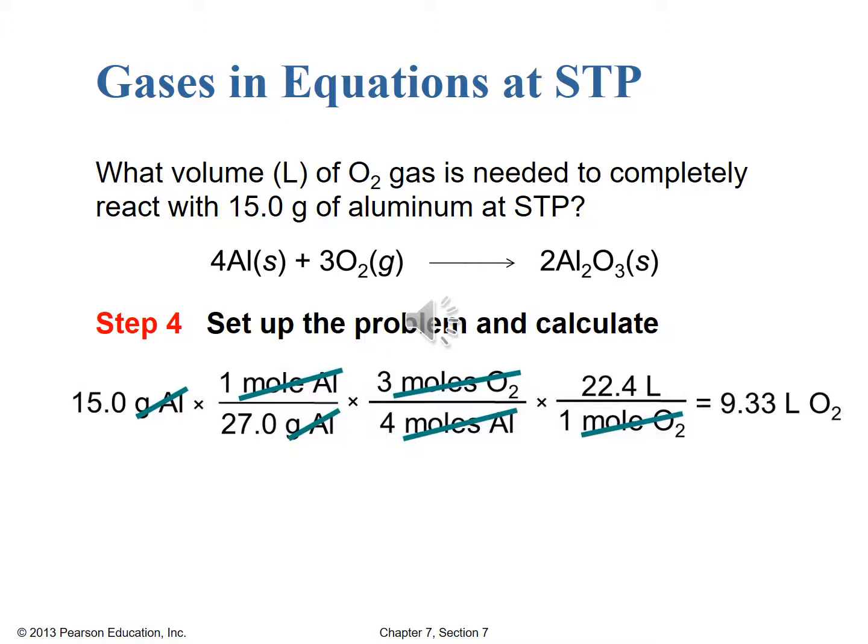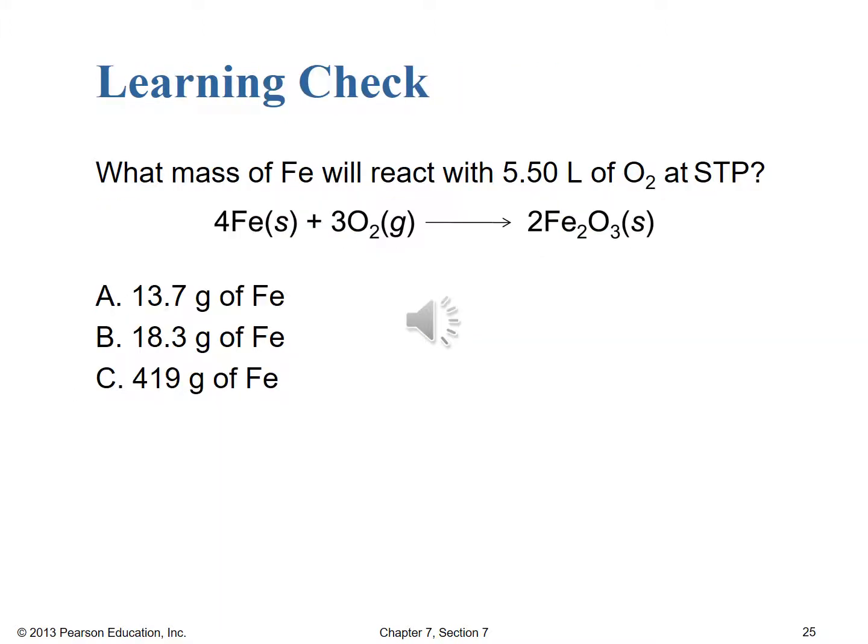Now that we've done it together, you know what's coming up — it's time for a learning check. What mass of Fe will react with 5.50 liters of O2 at STP? We're using the same balanced chemical equation, which should make things easy. We're going the other direction now, and be careful — it's iron instead of aluminum, but it ends up with the same mole ratios since both form 3+ ions as oxides. Please go ahead and solve this problem. Stop the video while you do your work and start it back up once you've determined the mass of iron necessary.